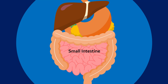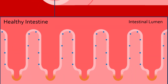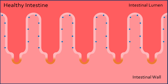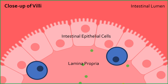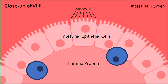The small intestine is where our body absorbs the nutrients and water from the food we eat. If we take a section of the small intestine and zoom into the inner surface, we can see that it is covered with finger-like protrusions called villi. This increases the surface area available for nutrient and water absorption, compared to if the inner surface were flat. Nutrients and water can cross the intestinal epithelial cells, enter a layer of intestinal tissue called the lamina propria, and eventually reach the bloodstream. You can see that even the epithelial cells have small protrusions called microvilli that further increase surface area for absorption, highlighting how important surface area is in the small intestine.